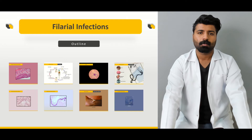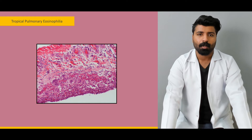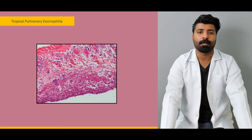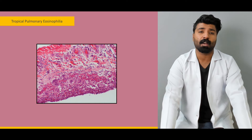First of all, we'll start with tropical pulmonary eosinophilia. We're going to talk about when pulmonary infiltrates and eosinophilia were correlated and reported for the first time, all five subtypes of pulmonary eosinophilia, how do we diagnose this patient, with which clinical symptoms and signs this patient is going to present to us, and how do we treat this patient.